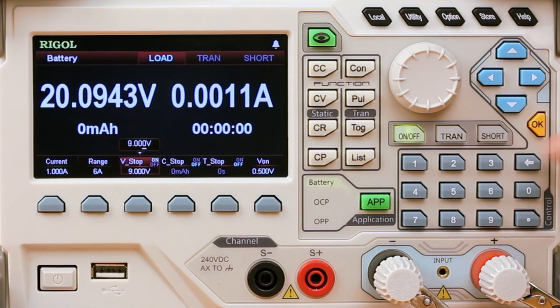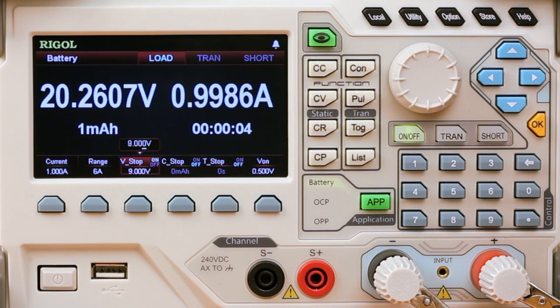Alright, let's go ahead and start this test. We see the current ramp up to 1 amp and the voltage will start to draw down. In real time we can also measure our capacity. Here we're going at about a milliamp hour every 3 or 4 seconds. And our timing as well is listed on the display. These are all great values, important values for our battery test that we're going to record and use later when comparing results.